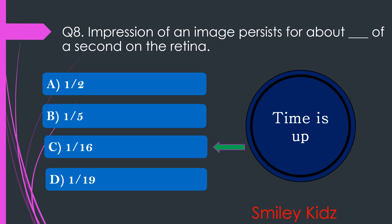Your time is up and the right answer is option C. 1 by 16. The impression of an image persists for about 1/16 of a second on the retina.